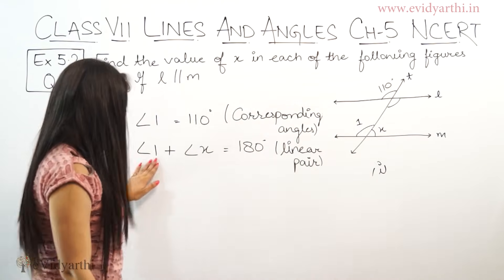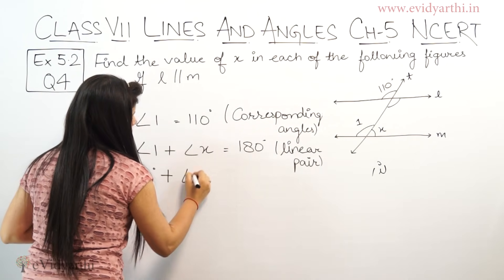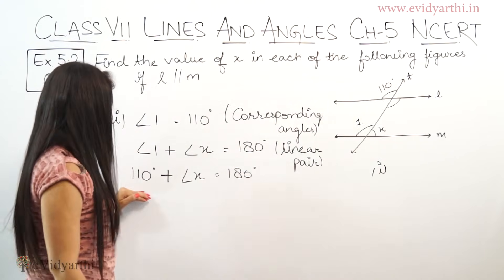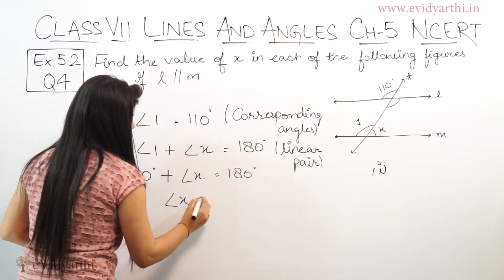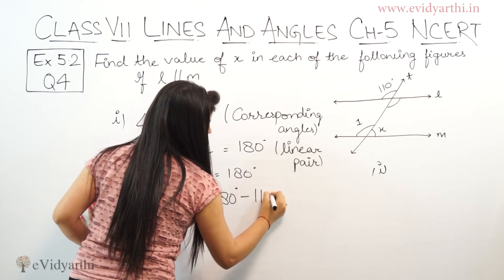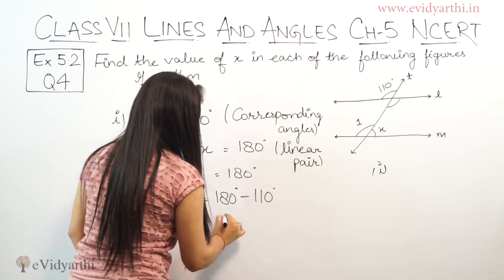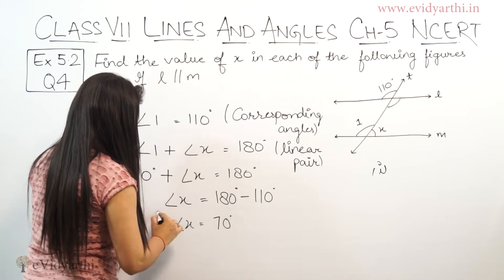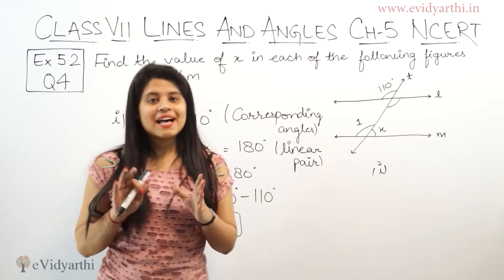Now I have to substitute angle 1, which is 110 degrees. So: 110 degrees plus angle x equals 180 degrees. So angle x equals 180 degrees minus 110 degrees. Let's subtract: 8 minus 1 is 7, and 1 minus 1 is 0. So angle x is 70 degrees.